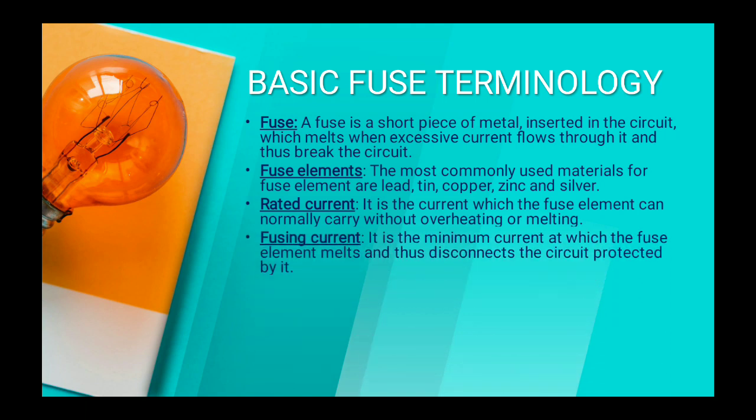Fusing current. It is the minimum current at which the fuse element melts and thus disconnects the circuit protected by it. This is the melting current at which the fuse element melts, or the short circuit current, or the maximum current at which the fuse melts and protects the devices.